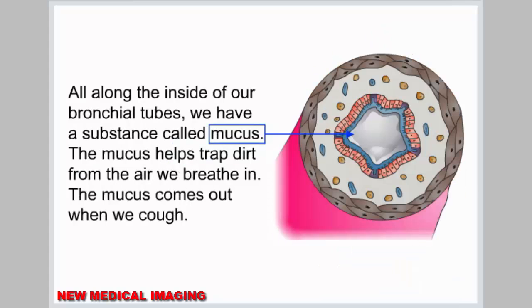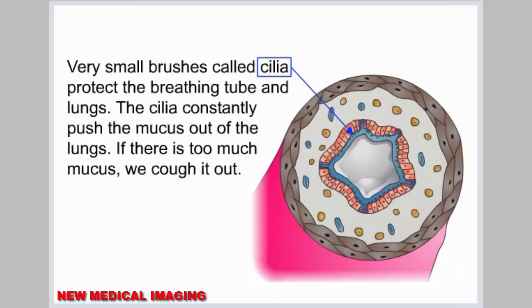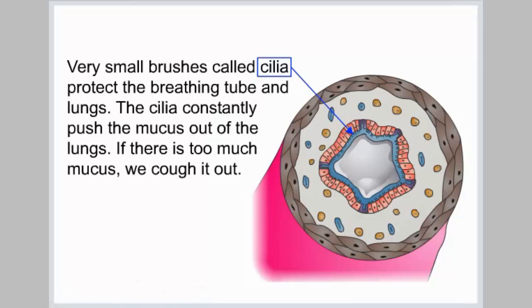All along the inside of our bronchial tubes we have a substance called mucus. The mucus helps trap dirt from the air we breathe in, and the mucus comes out when we cough. Very small brushes called cilia protect the breathing tube and lungs. The cilia constantly push the mucus out of the lungs. If there is too much mucus, we cough it out.